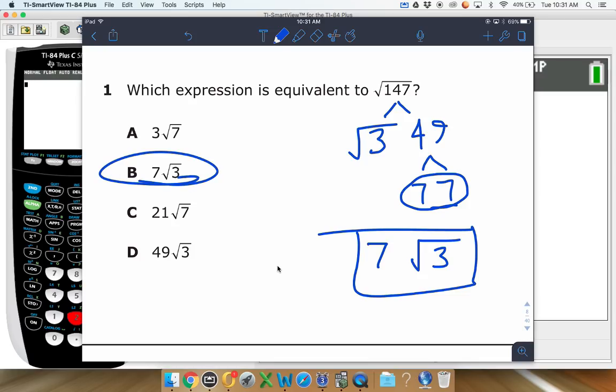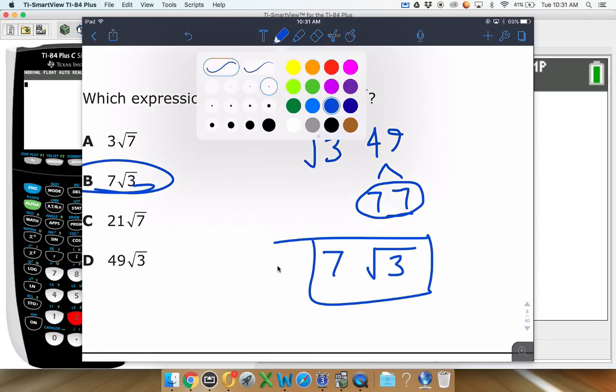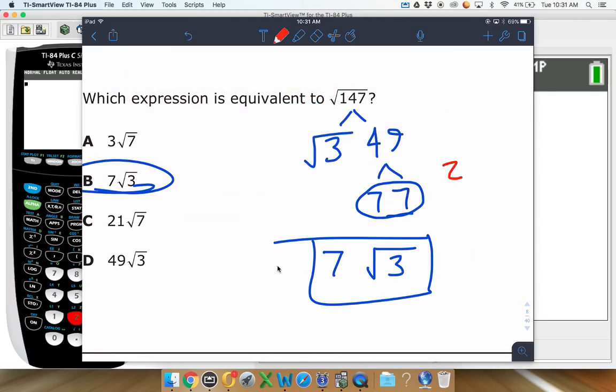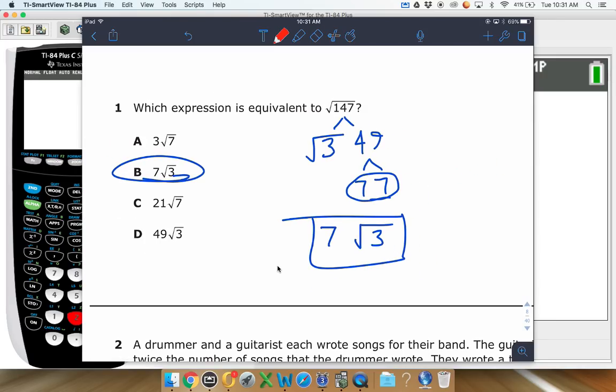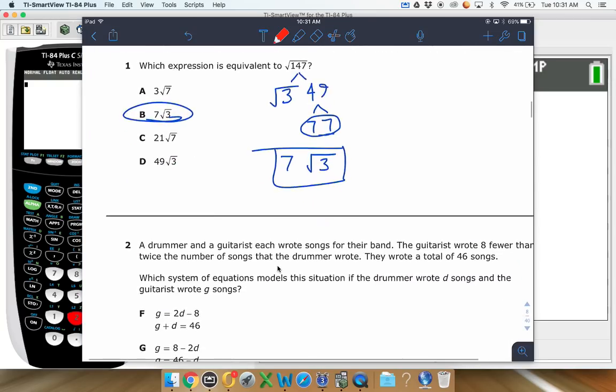Anything that's leftover that doesn't have a pair, you keep inside the radical. You multiply those together if there are multiple things. If you had multiple groups of other things here, like maybe a group of twos, you would do 7 times 2 on the outside of the radical. But in this case, we didn't have that. So that one's pretty straightforward. We'll move along here.